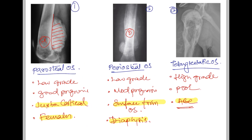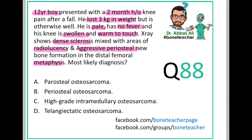With this knowledge, can we answer the question? The 3 kg weight loss confirms a significant lesion. Can it be parosteal osteosarcoma? It could be, but the X-ray shows aggressive periosteal reaction, and we know parosteal is low-grade, so it cannot be parosteal. Can it be periosteal? The lesion is in the metaphysis, not the diaphysis, so no. Can it be telangiectatic? No — there will not be any sclerosis in the telangiectatic type, which mimics aneurysmal bone cyst. Therefore, the correct answer is high-grade intramedullary osteosarcoma.